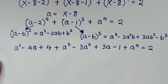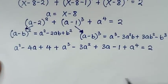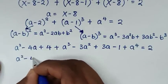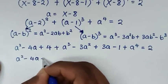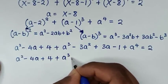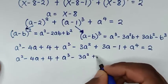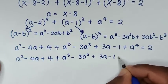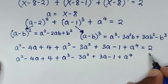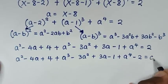In the next step, we take 2 to this side. It will be a square minus 4a plus 4 plus a power of 3 minus 3a square plus 3a minus 1 plus a power of 4 minus 2 is equal to 0.